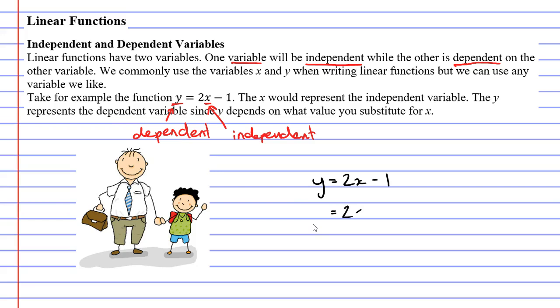So if x was, let's say, 1, y would become 2 times 1 is 2 minus 1 is 1. We required our x value in order to calculate our y value.